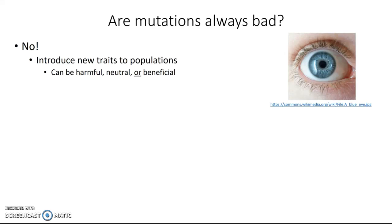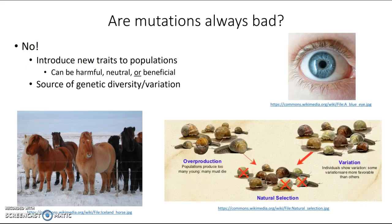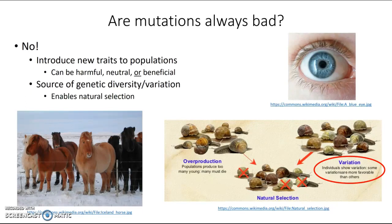Because mutations can introduce new traits into a population, they are a source of genetic diversity and variation. For example, the fur of Icelandic horses can occur in different colors — some are very dark, some are very pale, and there are other colors in between. These different colors probably arose through various mutations that appeared throughout the evolutionary history of these horses. Last semester we discussed natural selection, which requires both overproduction of offspring and variation between individuals. That variation generally comes from mutations, making them an important source of the variation that makes natural selection possible.